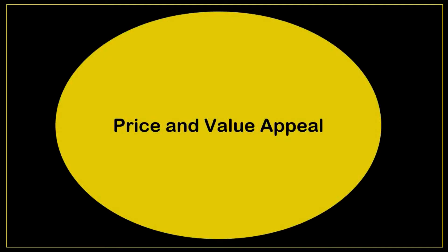Most common advertising appeals. Price and value appeal: by using price and value appeal, an advertiser promises the target audience that if they buy the advertised product, they will get more for their money. It is one of the most common and effective advertising appeals. It can be applied in several ways — for instance, an advertiser can lower the product price, keep the price same as rivals but offer more benefits, or keep the price and benefits the same and convince the audience the product is worth what is being charged. On screen, a print ad demonstrates price and value appeal.